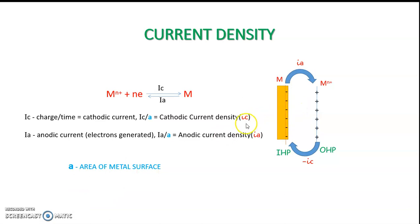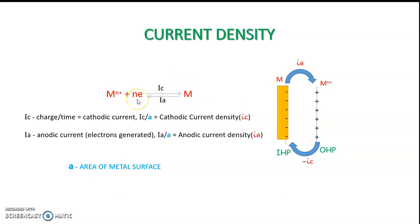When a metal is dipped into its solution, either deposition or dissolution starts depending on the concentration of metal ions in the electrode and in solution. If dissolution occurs, the metal oxidizes to metal ions and electrons, and the generated electrons lead to charge formation.